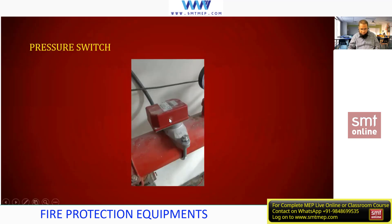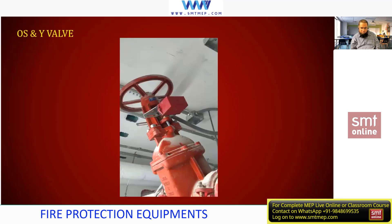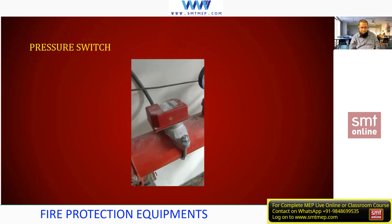In the same zone control valve assembly, the pressure switch is also here. Flow switch and pressure switch are different components. The flow switch you'll find near the pump, while the pressure switch you'll find at each zone control valve assembly. The purpose: whenever there is a change in pressure or when flow starts, this will give a signal to the control system so that the control system can activate the equipment.